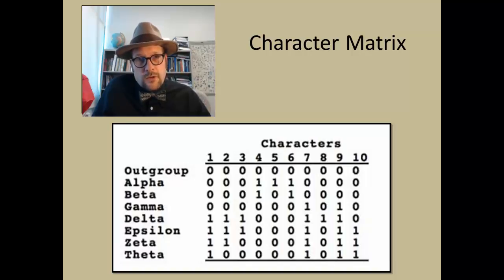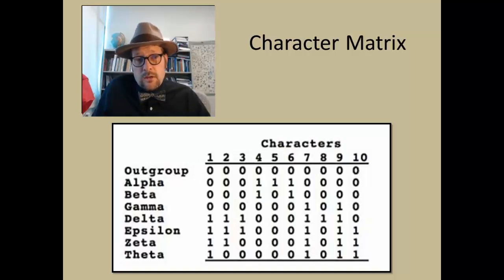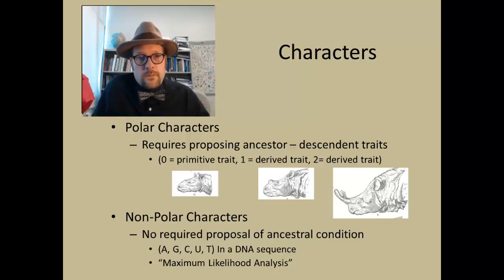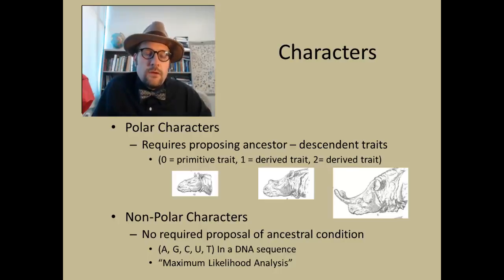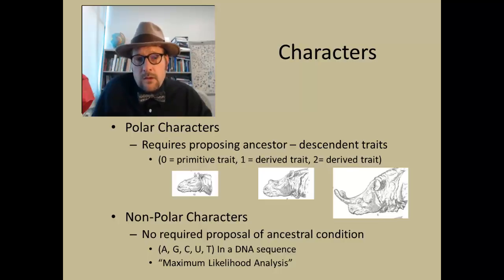Some characters can be what are called polarized. The characters don't necessarily need to be zeros and ones — they could be any numbers — but they must have similarity with the other ones in the table. Polarized characters require proposing an ancestor versus descendant trait. When you see a zero, you are hypothesizing that it is a primitive trait. In paleontology, we do this by looking at the oldest fossils and specifying their characteristics as zero — the older, more primitive condition.